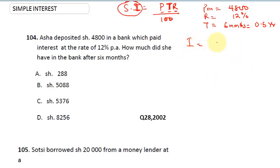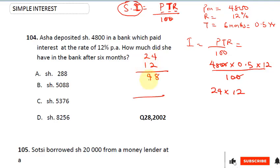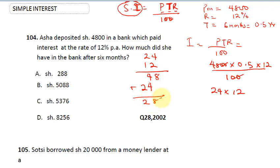To find the interest she's going to get: SI = PTR/100. The principal is 4,800, the time is 0.5, and the rate is 12, all divided by 100. The double zeros cancel, leaving 0.5 × 48 = 24. Then 24 × 12: 2×4=8, 2×2=4, 1×4=4, plus 2. When you sum it up this gives 288. So the interest is 288 shillings.